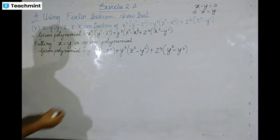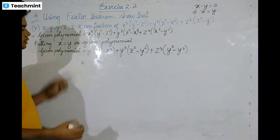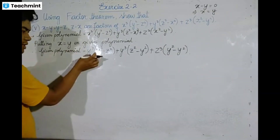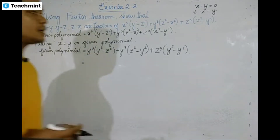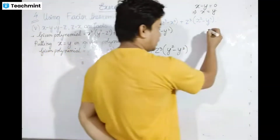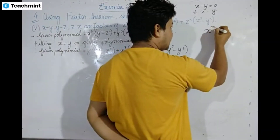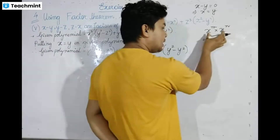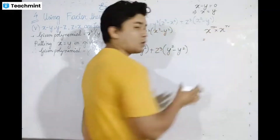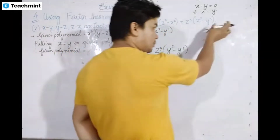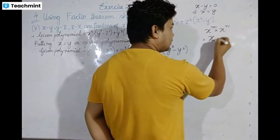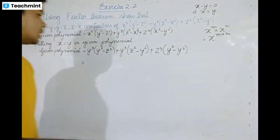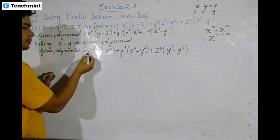Now we multiply the terms. y cubed times y squared, and using the rule: x to the power m multiplied by x to the power n — when the base is the same, we add the powers.